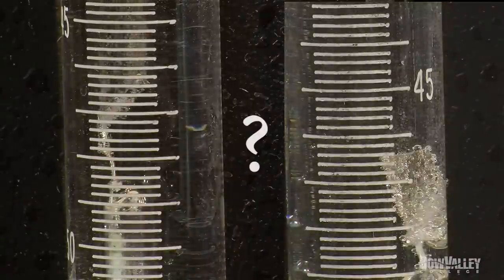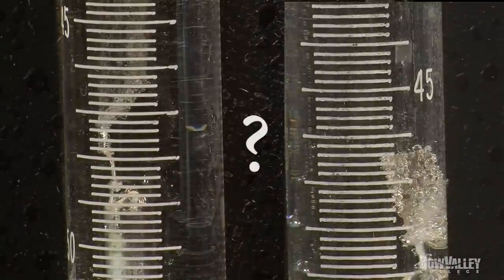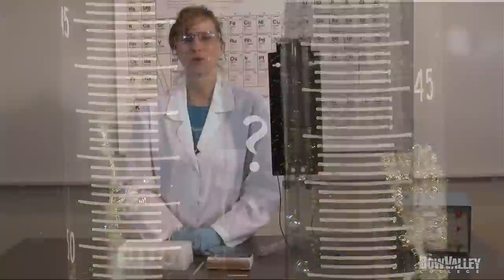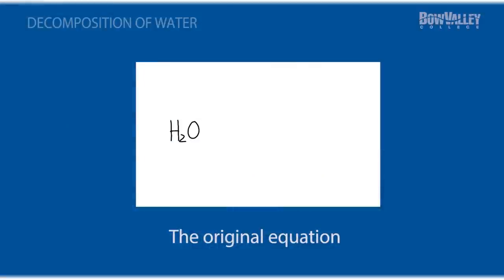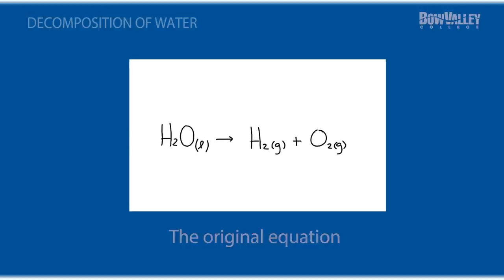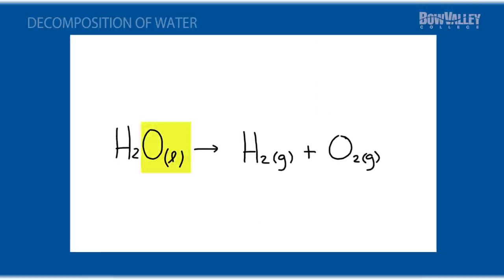So which tube contains hydrogen and which contains oxygen? We can use our formula for the decomposition of water to make a prediction. Here is the original unbalanced equation. We have one oxygen on the left side and two on the right. So we must place a two in front of our water molecule. The oxygens are now balanced with two on each side.